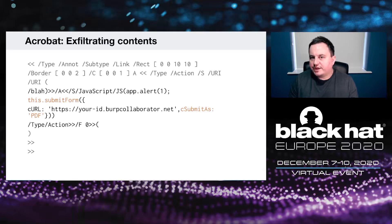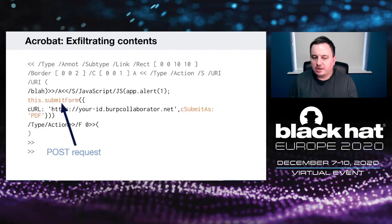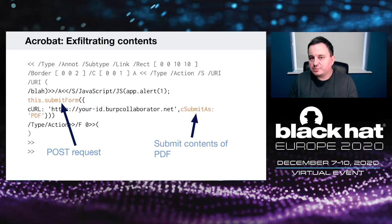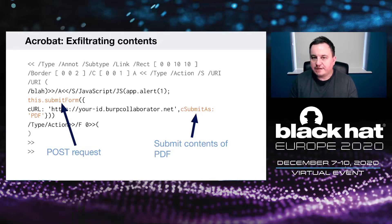I thought — we can exfiltrate the contents of the PDF. So I injected the submit form function, called it to an external Collaborator URL, and passed the 'submitAs' property set to 'PDF'. This would steal the contents of the entire PDF, which is pretty powerful — if you have a blind PDF injection, you can get the entire contents of the PDF whenever the user clicks anywhere on it.